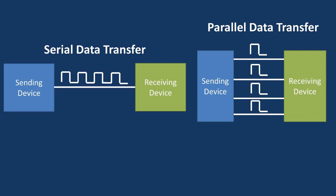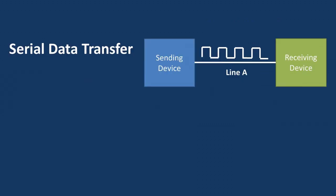In this video, we'll be going over how a computer transfers data in serial transfer scenarios and parallel transfer scenarios. We will start off with a serial data transfer. In serial data transfer, there is a single line that is used for data transfer which connects the sending device to the receiving device, as depicted on this slide.